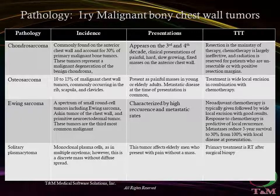Osteosarcomas make up 10-15% of malignant chest wall tumors, commonly occurring in the rib, scapula, and clavicles. These tumors present as painful masses in young or elderly adults. Metastatic disease at presentation is common, with the most common sites being lung, lymph nodes, and liver. The mass appears calcified on imaging with lytic or sclerotic osteoid bone matrix. Treatment is wide local excision in combination with chemotherapy. The presence of metastases drastically reduces 5-year survival from more than 50% to between 15 and 20%. Response to chemotherapy, tumor burden, and presence of metastases are predictive of overall survival.